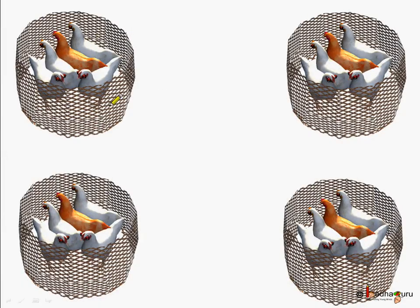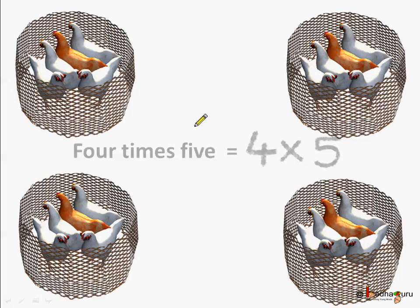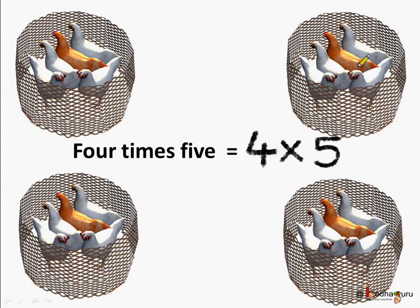Let's say there are four baskets and each basket has five hands in it — four baskets and each basket has five hands in it. We need to find out how many total hands there are. As we saw in our last lesson, we do multiplication. Four baskets multiplied by five hands in each basket is equal to 20 hands.